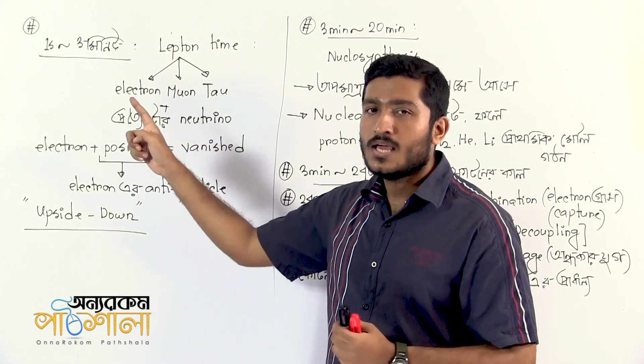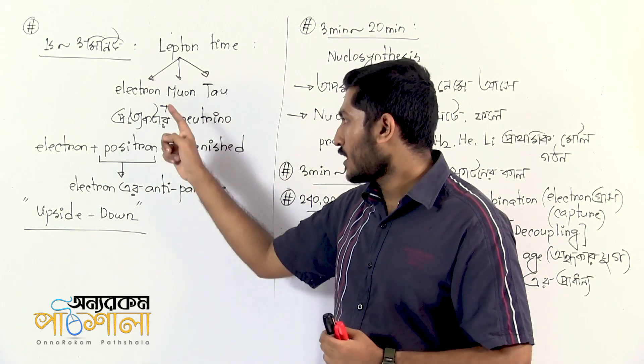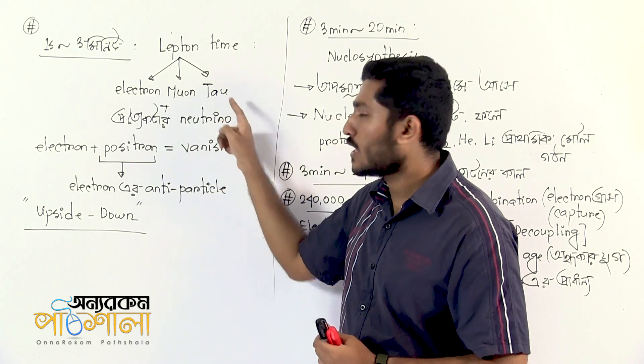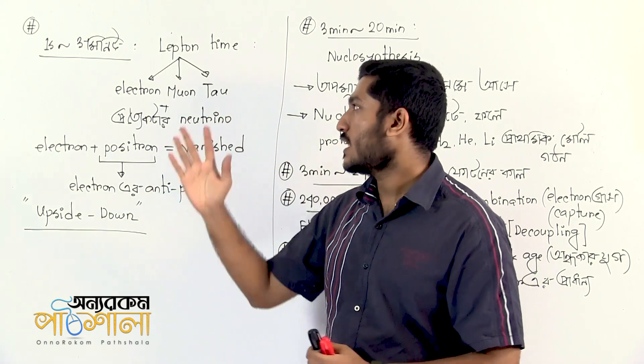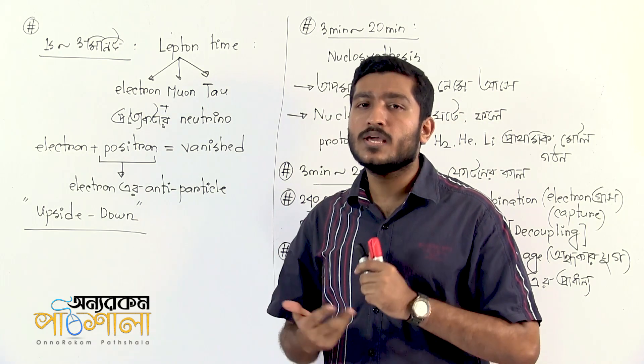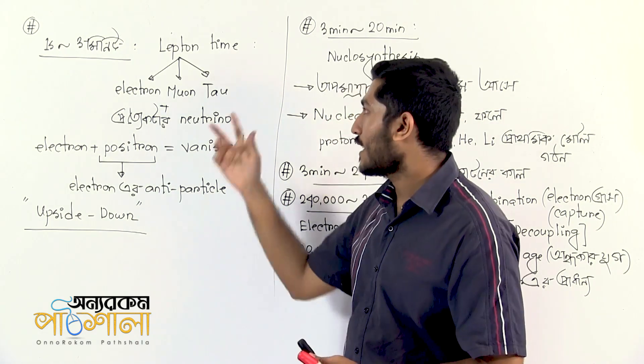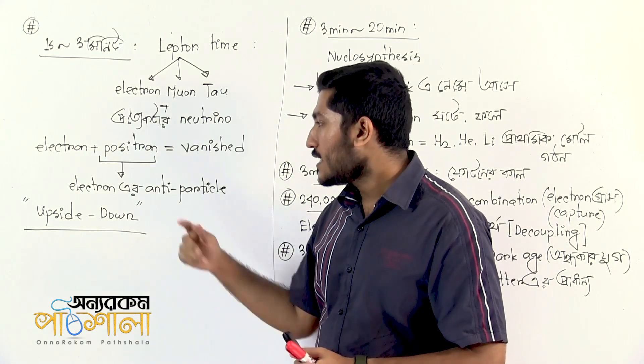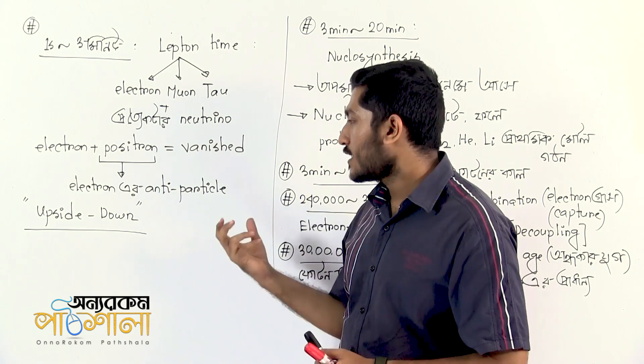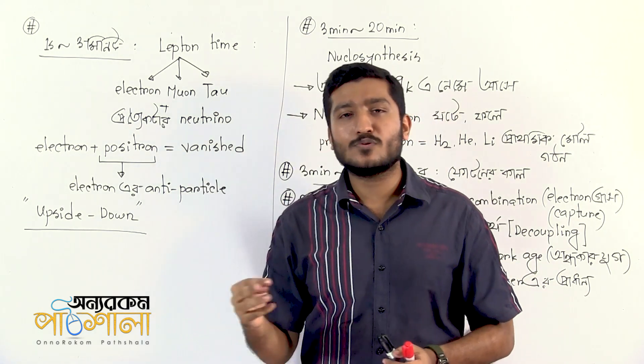These leptons include the electron, muon, tau, and their associated neutrinos. Each lepton has a corresponding antiparticle. During the lepton era, leptons and their antiparticles interact, and the process continues with matter-antimatter dynamics similar to what occurred in the quark era.